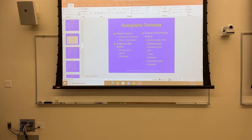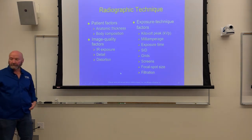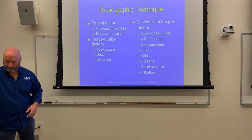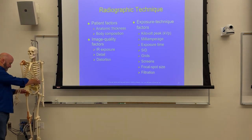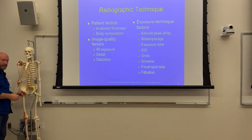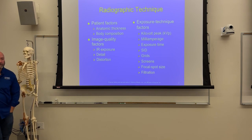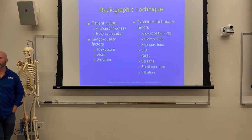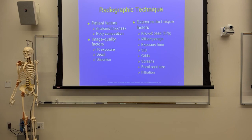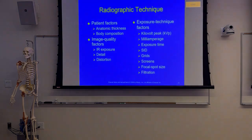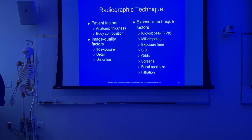Let's review what we've talked about. KVP - we'll go one at a time. Any questions on KVP, what changes in KVP affect, what they don't affect, whether in the beam spectrum, interactions inside of the patient, or interaction at the image receptor? Let's back up to KVP: what KVP controls inside the x-ray tube or inside the x-ray beam.